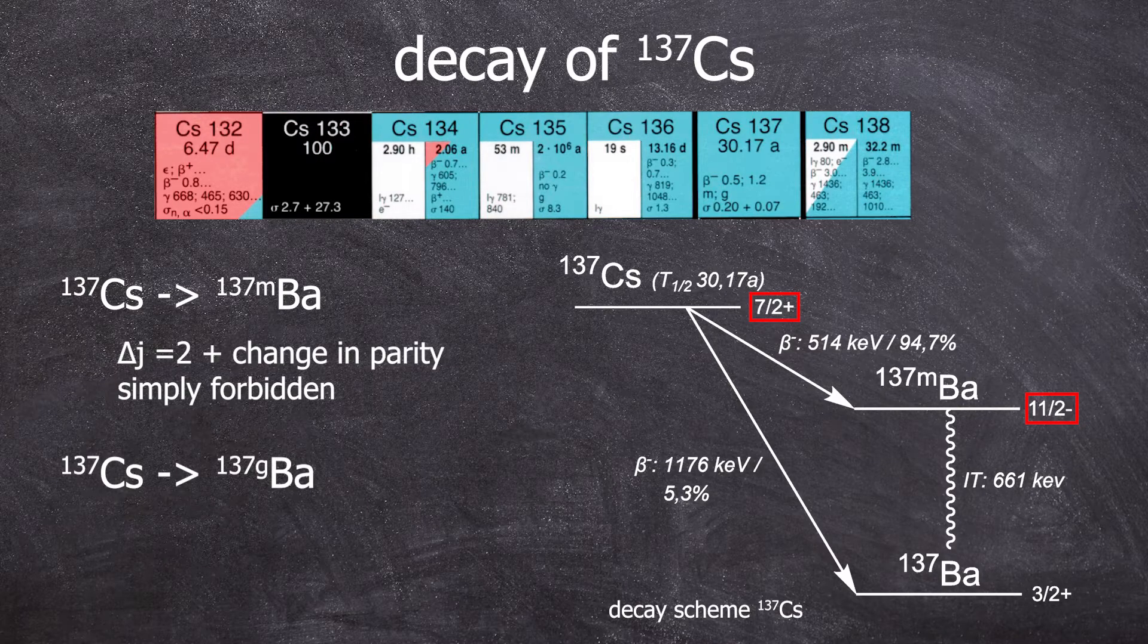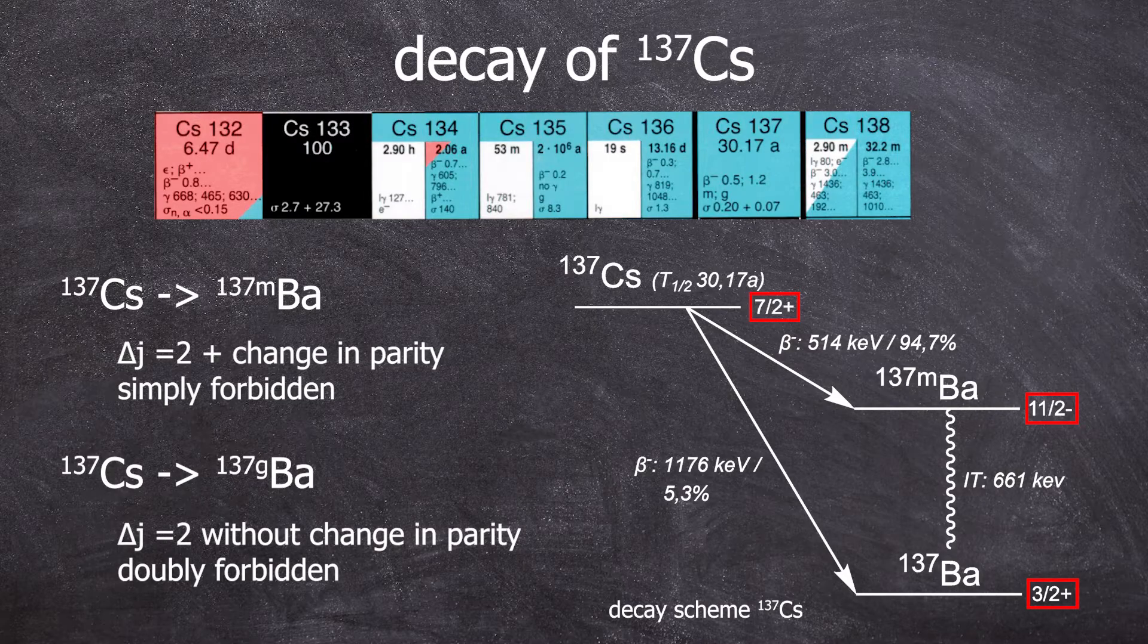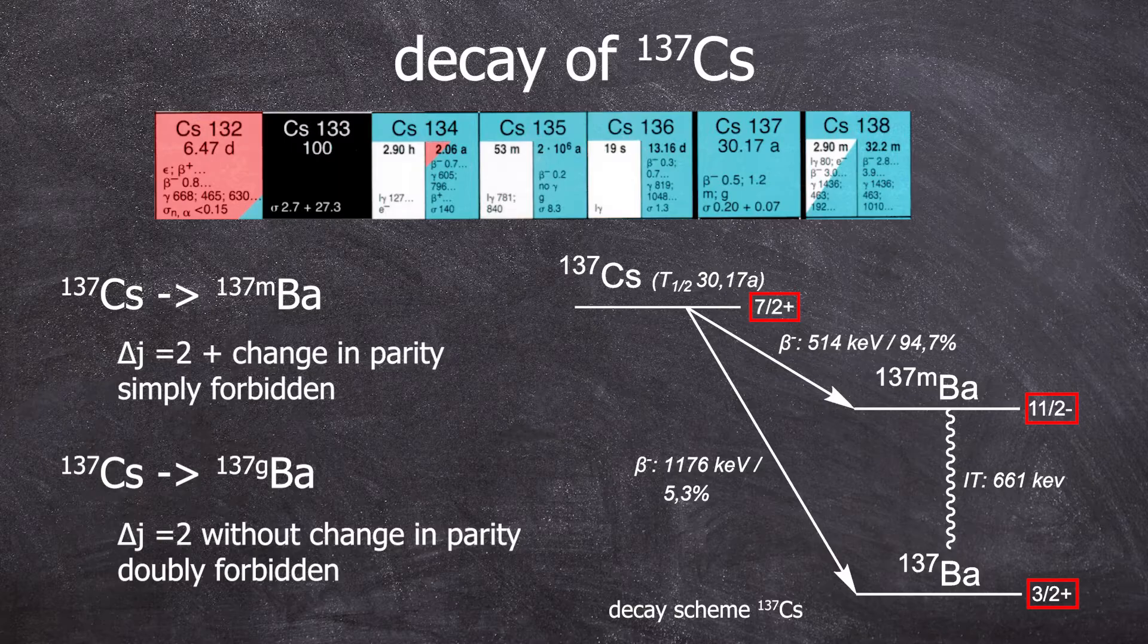The transition into barium-137G also has a delta J of two, but there is no change in parity, making this transition doubly forbidden.